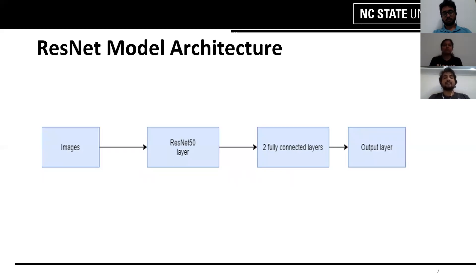The output of this ResNet50 layer is given to two fully connected layers having 512 units each. The output of these fully connected layers is then given to an output layer which gives a column matrix of dimension 28 x 1.